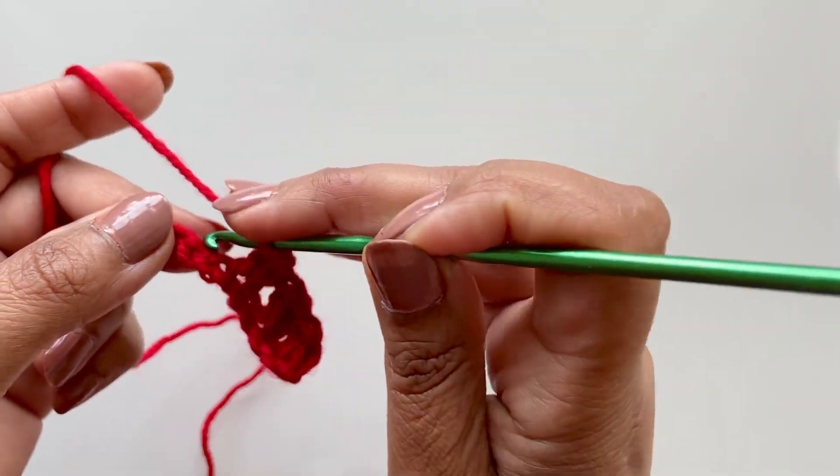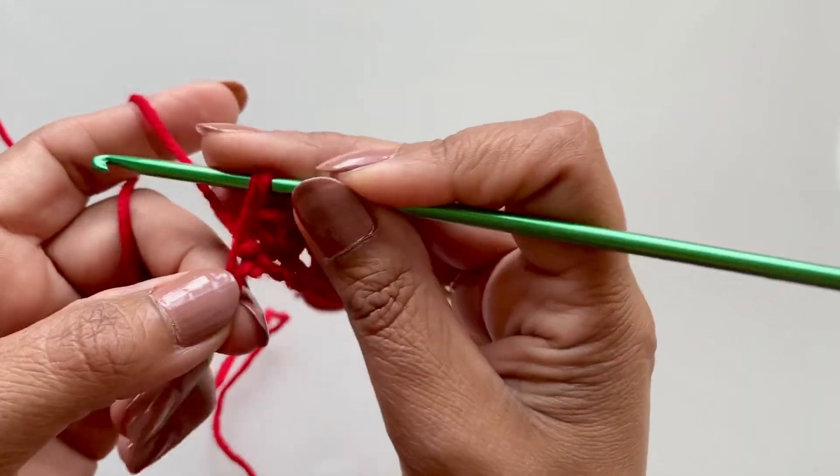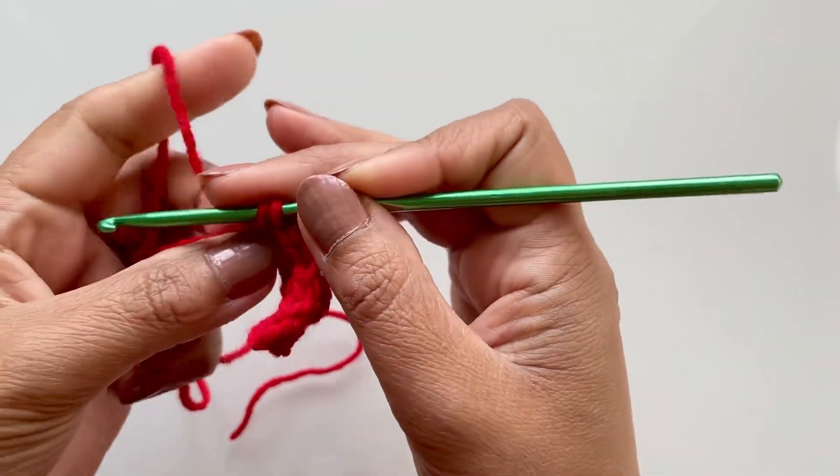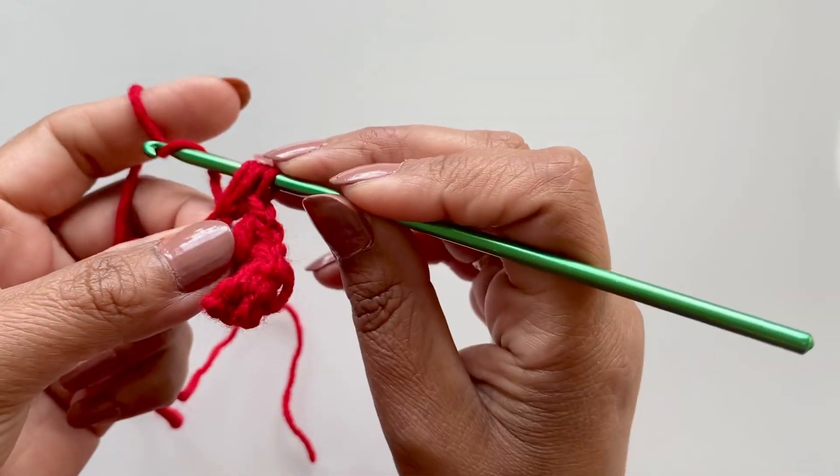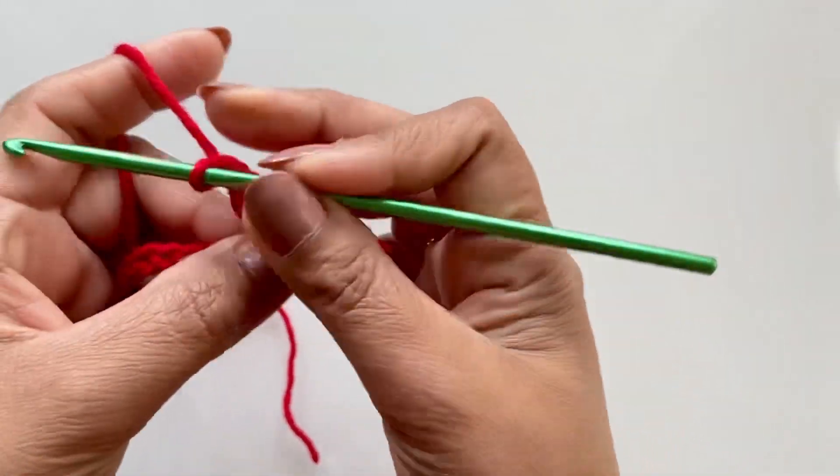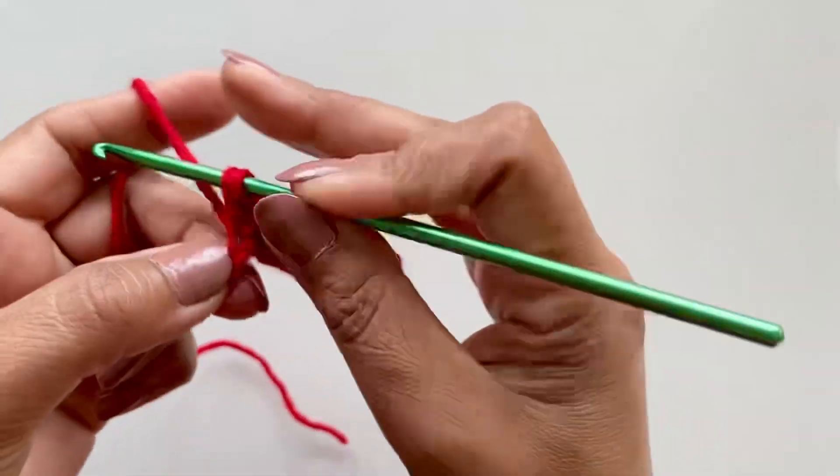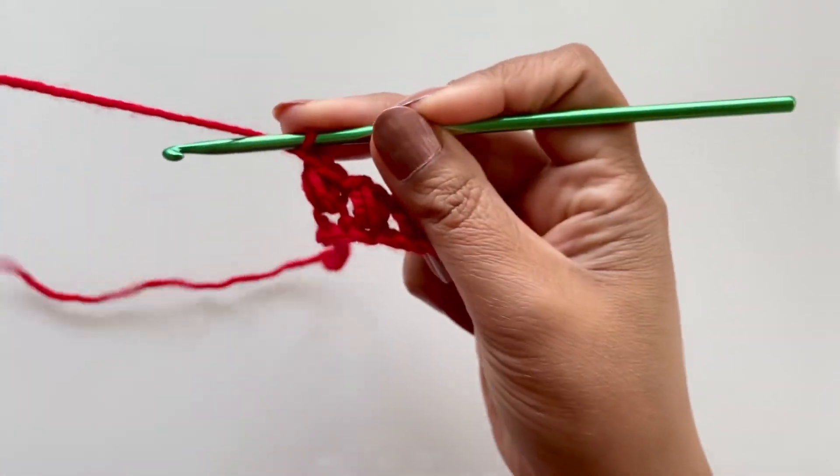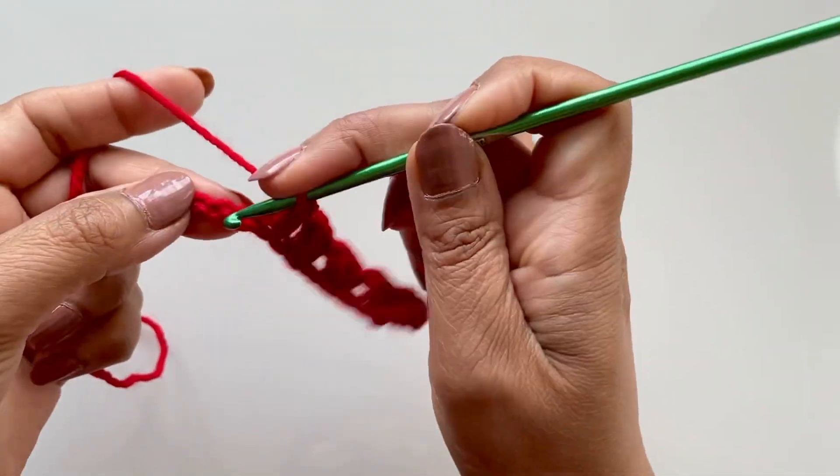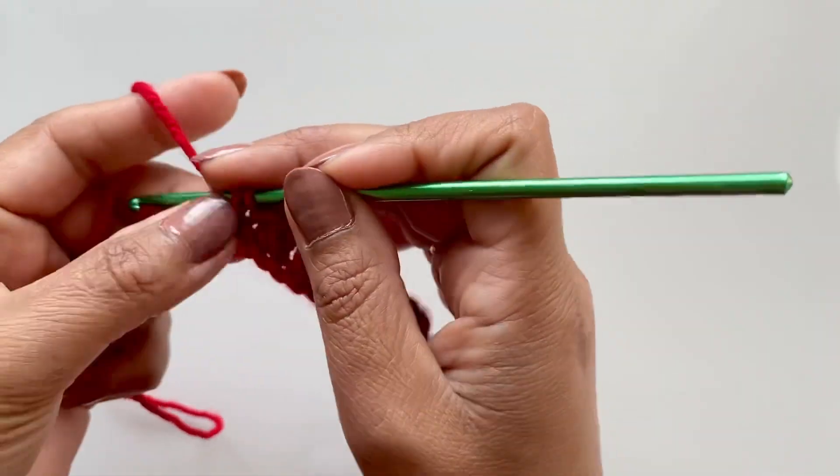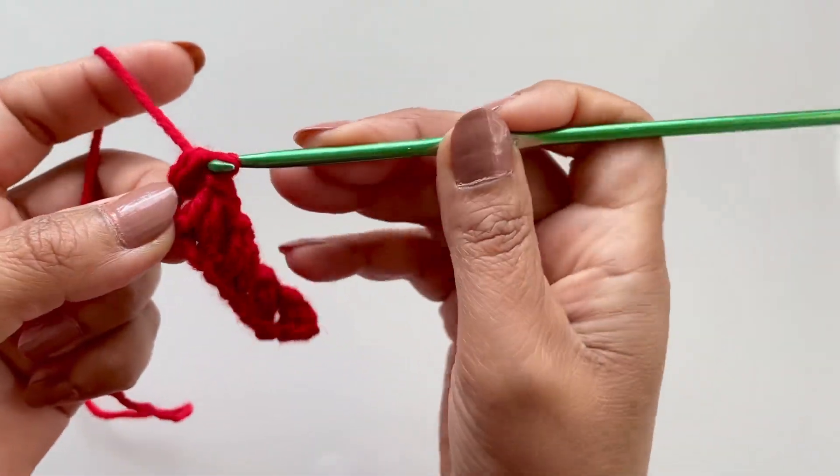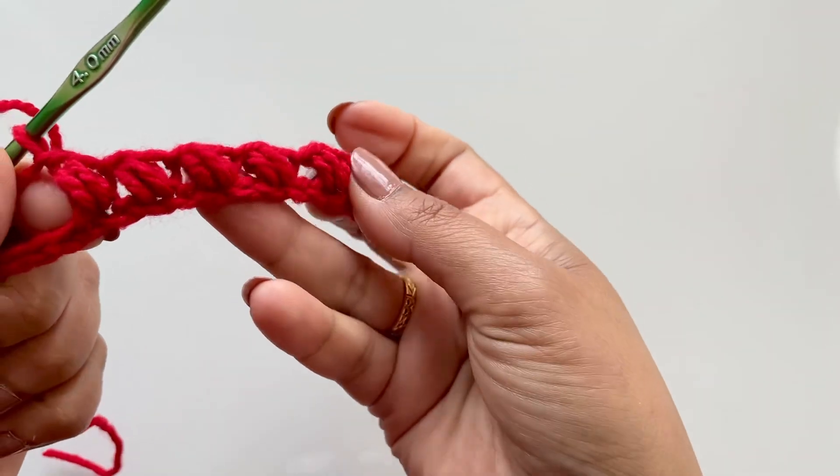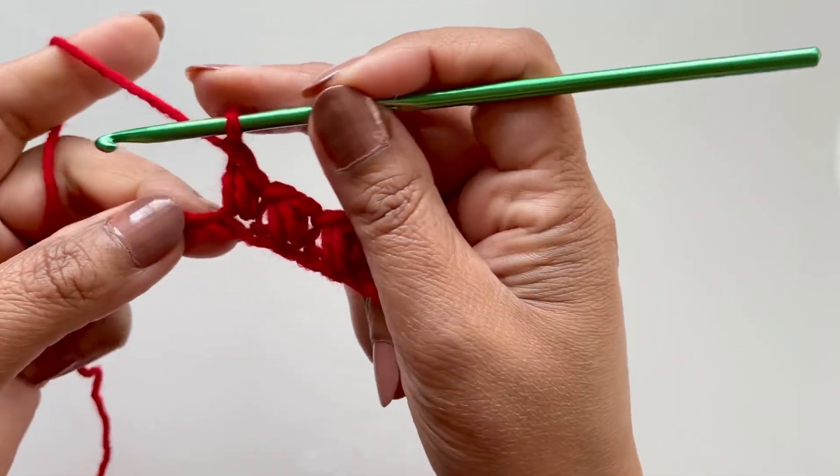Miss one, go to the next one, pull up a loop, yarn over and pull up a loop. 4 loops, pull through all 4, chain 1, miss one, go to the next one, 4 loops, pull through all 4, chain 1. See this little pattern coming here.